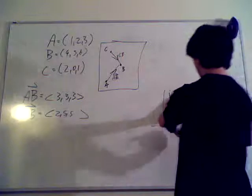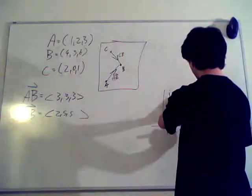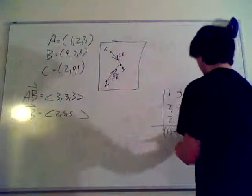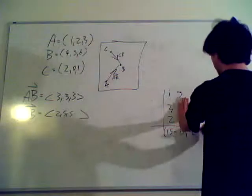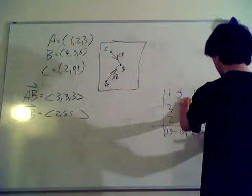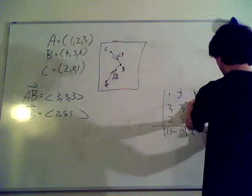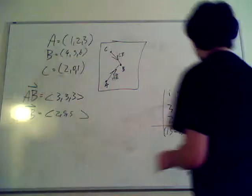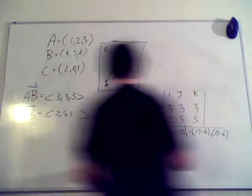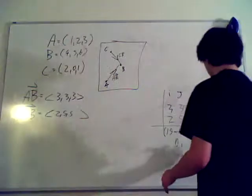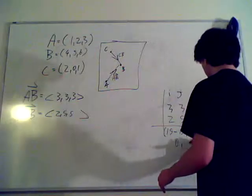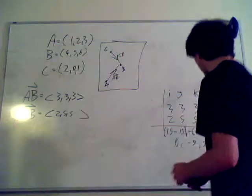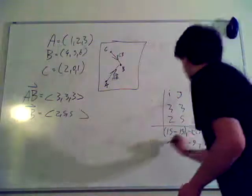That's the cross product setup. So, I, J, K — three, three, three — two, five, five. So fifteen minus fifteen — that works out — comma, negative fifteen minus six, comma, fifteen minus six. That is a really bad example. So the cross product is zero, negative nine, nine.